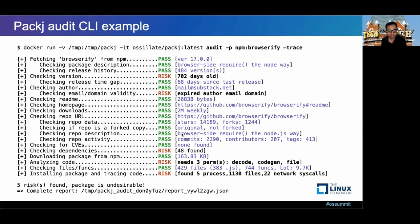You can compare the package description and the repo description: the package says 'browser-side require, the Node way' and the repo says the same — 'browser-side requires, the Node.js way' — confirming this is the correct repo. There have been a number of comments and contributions, which is good. No CVEs were found; CVE information is fetched by querying the OSV database maintained by Google.